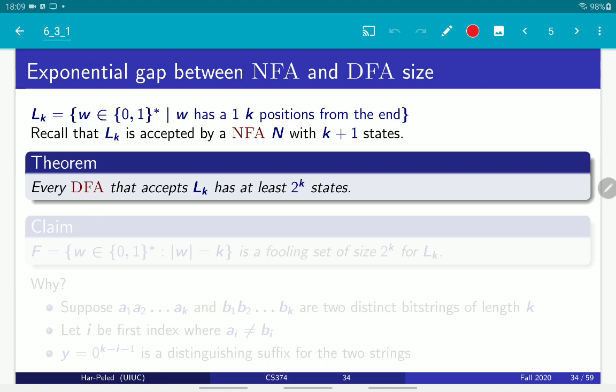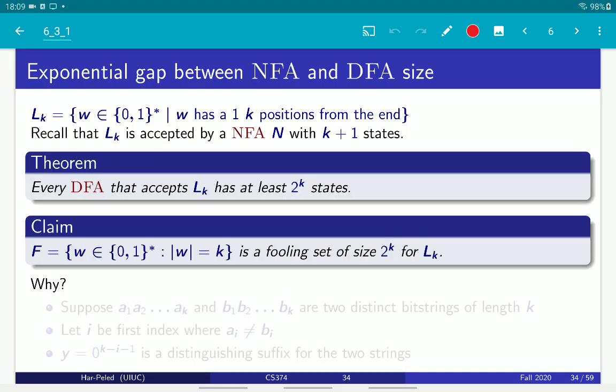Because let's look at the set of strings, which are all binary strings of length K. And the claim is that this set has 2 to the K strings. If indeed this is a fooling set,